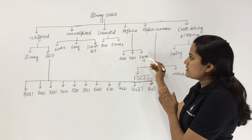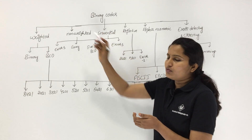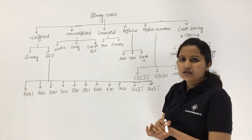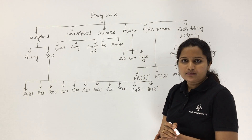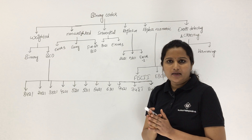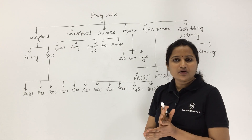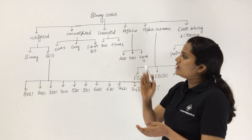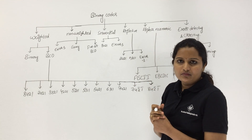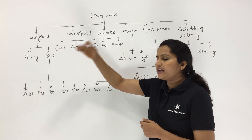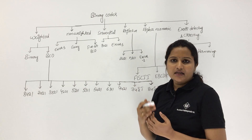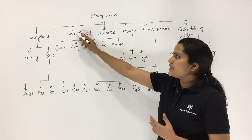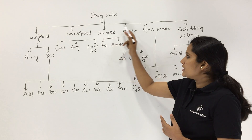XS3 is going to come under three different categories: XS3 is a non-weighted code, XS3 is a sequential code, and XS3 is also a reflective code. This is a very important exam question. They may ask: which code is both non-weighted, sequential, and reflective? The answer is XS3.